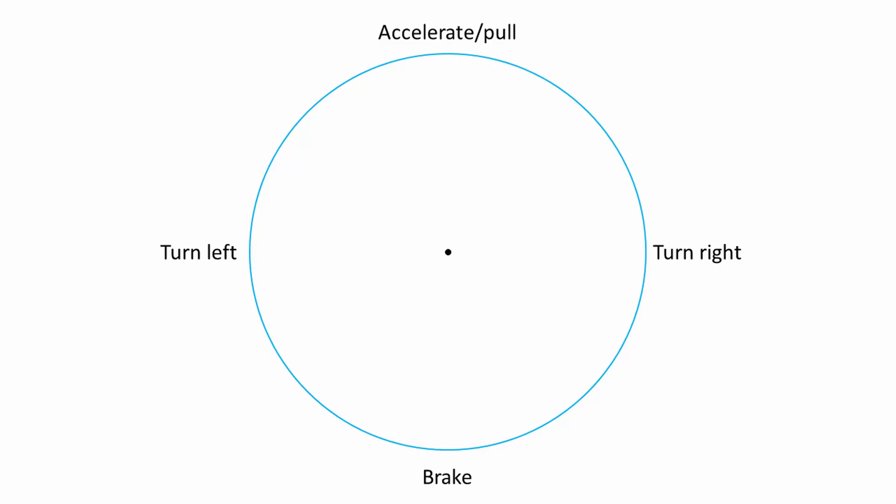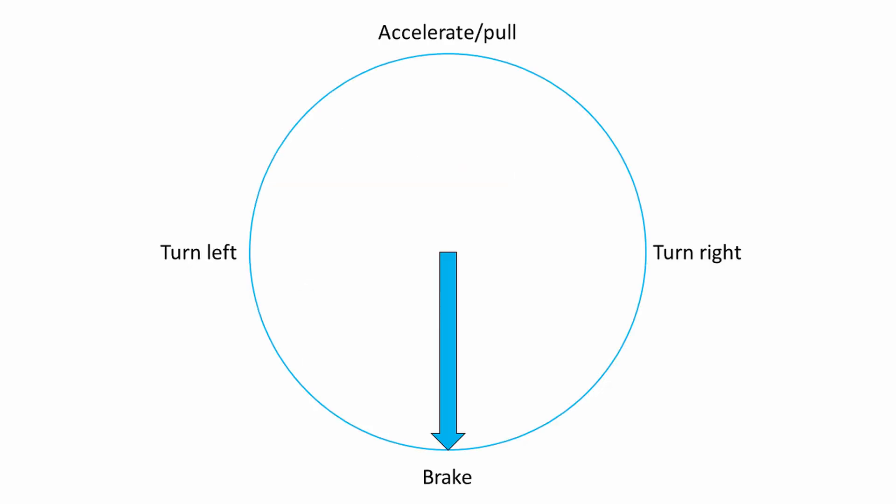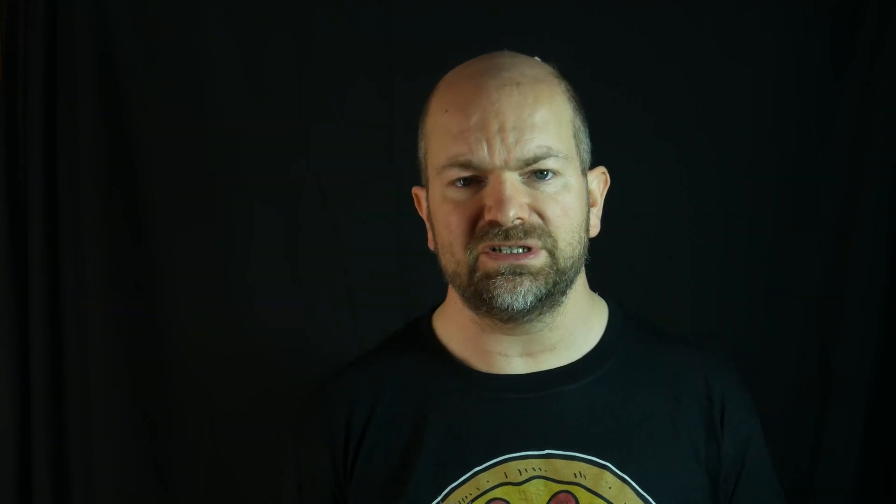The tyre has a finite amount of force that it can generate in all directions. If we're accelerating or drawing a load - pulling something behind the vehicle - we can keep generating more and more pull up to the point where we reach that maximum pull point at about 20% slip. On tarmac, if we go beyond that, the amount of pull available will start to drop fairly steeply. The same is true for braking: you can generate an increasing amount of braking force up to the peak force point, then force drops away - quite pronounced on tarmac, rather less so on gravel.